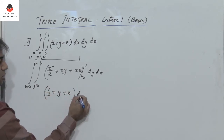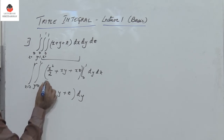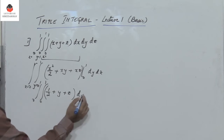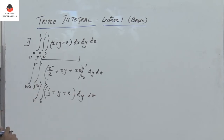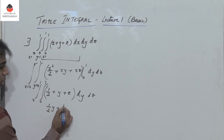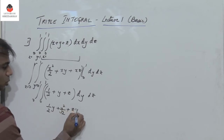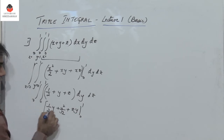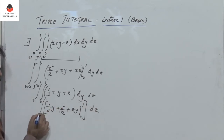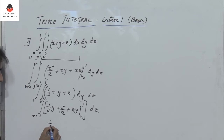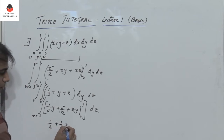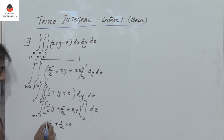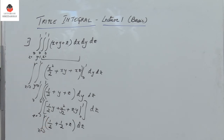Now this has to be integrated with respect to y varying from 0 to 1, and then z varying from 0 to 1. Integrating with respect to y gives y/2 + y²/2 + zy, with y varying from 0 to 1. Substituting y = 1 gives 1/2 + 1/2 + z, and observe that half plus half is 1, so we have (z + 1).